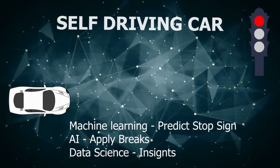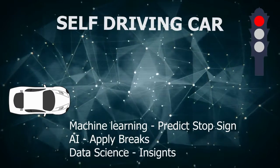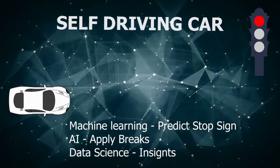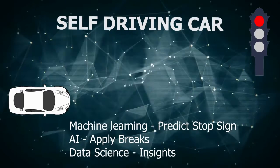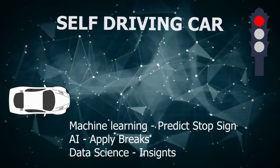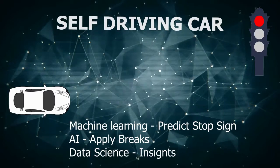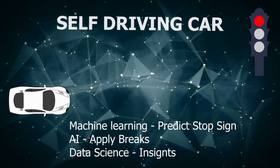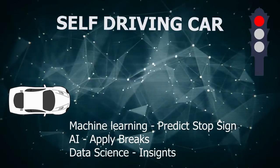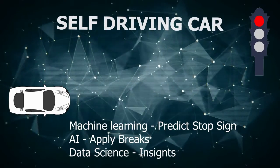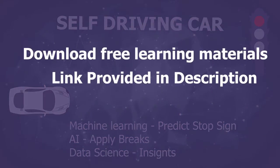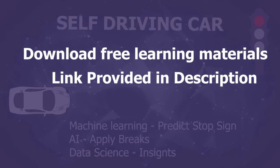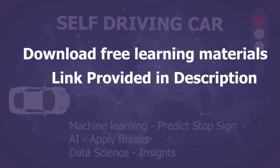I hope this short video gave you an insight on the difference between data science, machine learning, and artificial intelligence. To summarize: Data Science produces the insights. Machine Learning produces the predictions. And Artificial Intelligence performs the action. Click the link in the description to download the free data science learning materials. Like, share, and subscribe to our channel to learn about future technologies.